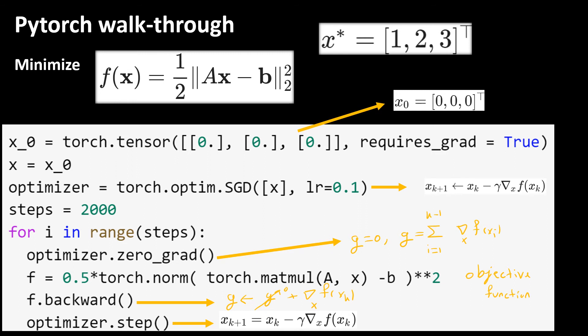Our initial value is a vector of zeros. As opposed to the univariate function, we need to do more steps. Here we do 2,000 steps.